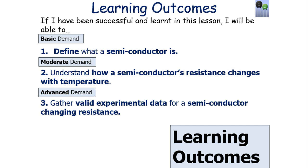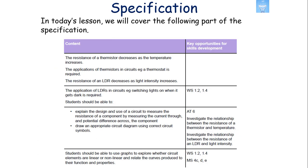We're going to try and define what a semiconductor is, understand how a semiconductor's resistance can change with both temperature and light intensity, and look at what experimental data would look like when we compare the semiconductor's change in resistance with either light intensity or temperature. This links into the AQA GCSE separate and combined science qualifications for physics, where you need to look at both a thermistor and an LDR and how their resistances can change with the conditions of the surroundings.